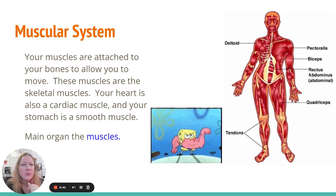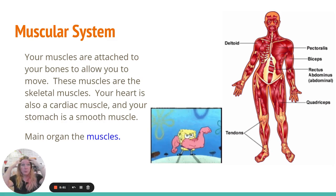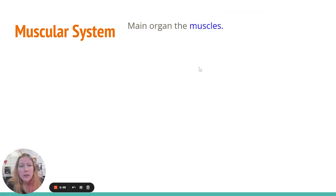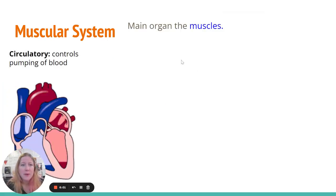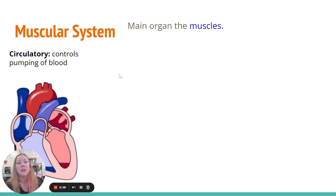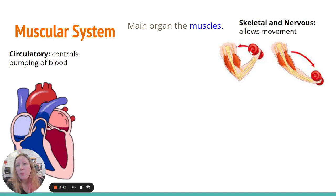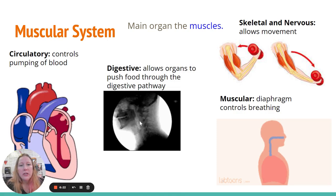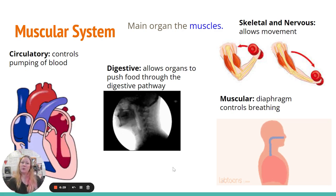Your muscles are attached to your bones, which allows you to move. Your heart is also a cardiac muscle — it's one you don't have to think about moving. It's an involuntary one that your brain maintains without you even thinking about it; your heart continues to pump. The main organ of the muscular system is the muscles. The heart is made of cardiac muscles, which is why it's part of the cardiovascular system. Your skeletal and nervous systems allow movement, and the diaphragm is the muscle that allows you to breathe. When you eat or drink something, it moves through your esophagus down to your stomach, and then the circulatory system takes those nutrients to your body.